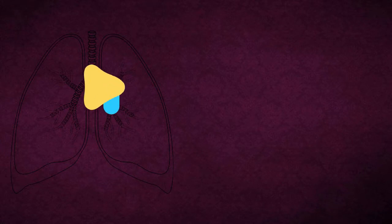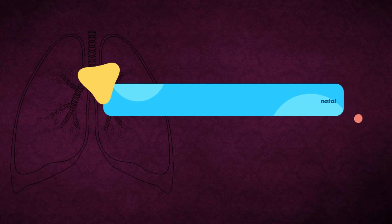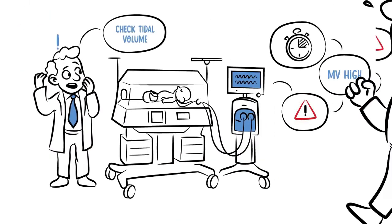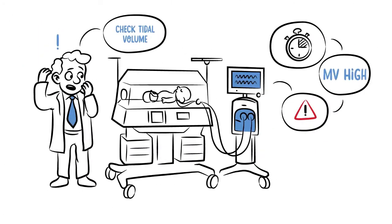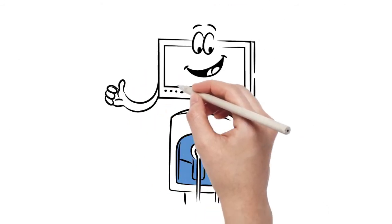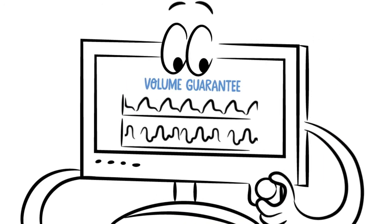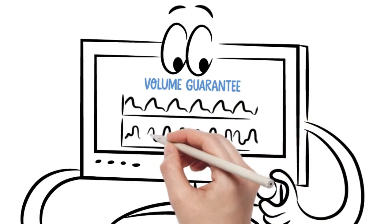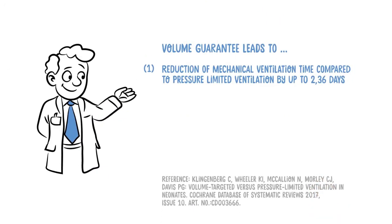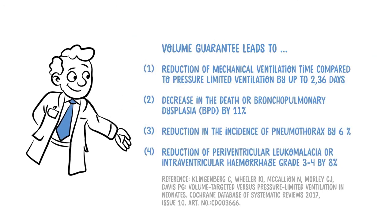Let's move on to the Pressure Control Mandatory Minute Volume mode in neonatal. The patient can always breathe spontaneously at PEEP level. If the spontaneous breathing of the patient is insufficient to achieve the set minute volume, machine-triggered, time-cycled mandatory breaths are applied. These mandatory breaths are synchronized with the patient's own breathing attempts. The set breathing frequency is therefore the maximum number of mandatory breaths. During spontaneous breathing at PEEP level, the patient can also be pressure supported.